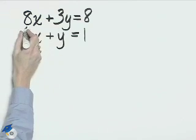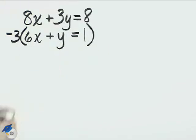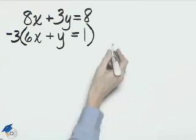I'll multiply this second equation by negative 3, so I'll have a positive 3y and a negative 3y, and the y's will drop out.